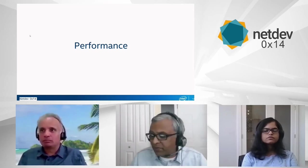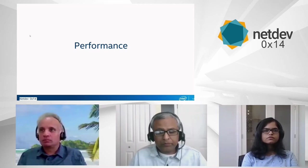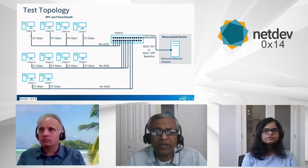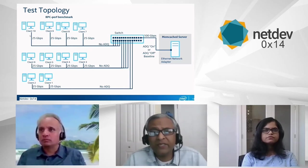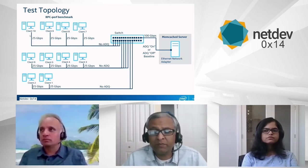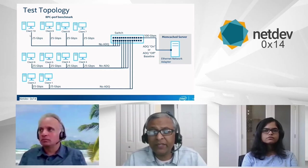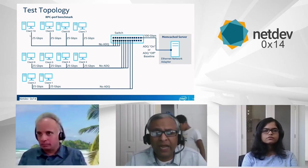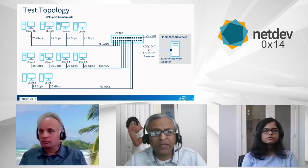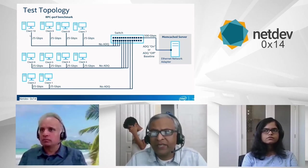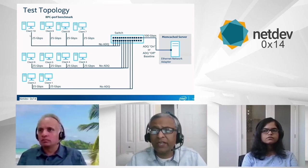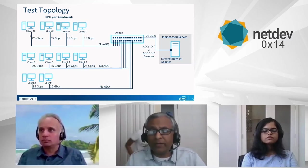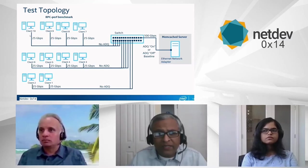Using all of this, we put the Memcached application to the test. What you see on the right-hand side is the device under test, which is Intel's next-generation NIC hosting the Memcached server. On the left-hand side, there are 10 clients. With Memcached, it is like a request-response — you send a key and get back a response; it's like a key-value pair. That's really the test topology. Now let's look at some performance results.